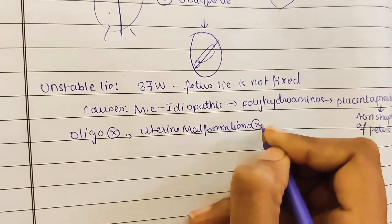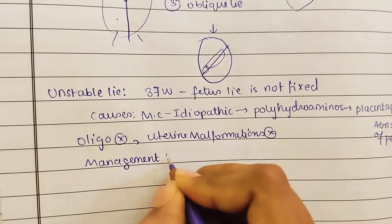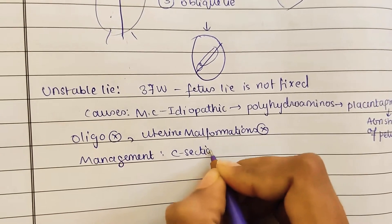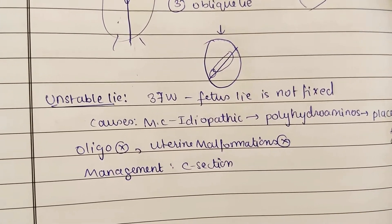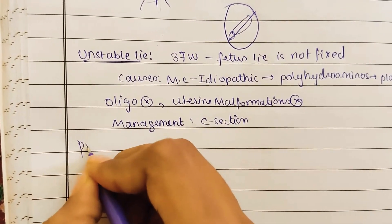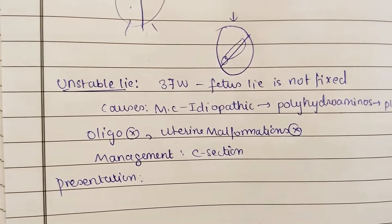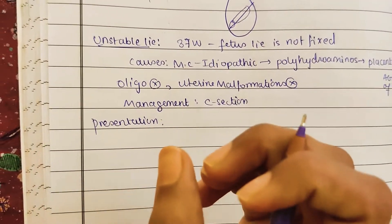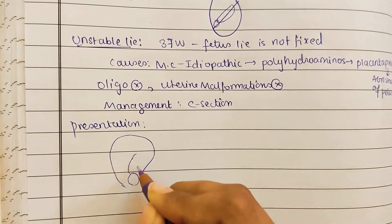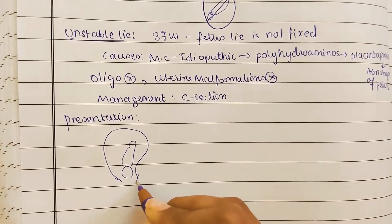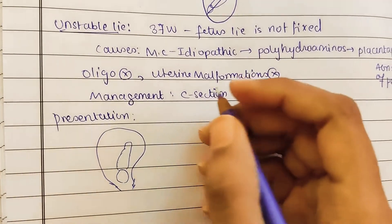Management for unstable lie is caesarean section, because we are still unable to determine the position of the baby in the mother. Now coming to presentation - presentation is the part of the fetus which occupies the lower part of the uterus. Normally the fetus will be positioned like this. In longitudinal lie this is the presentation.